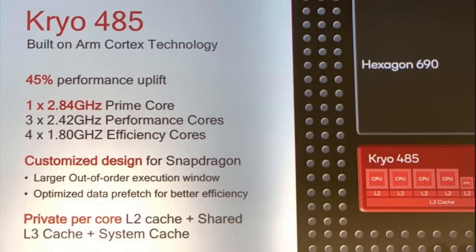First, let's talk about the CPU. The CPU is an octa-core processor divided into 4 powerful and 4 efficient cores. The powerful cores are ARM Cortex A76 with some customization — custom cores called Kryo 485. The 4 power-efficient cores are ARM Cortex A55.